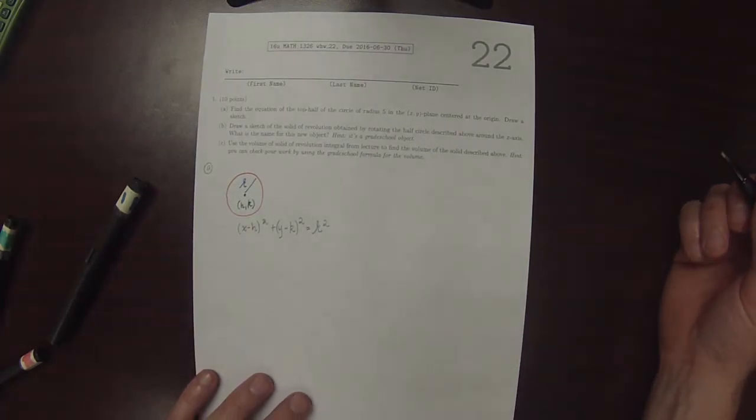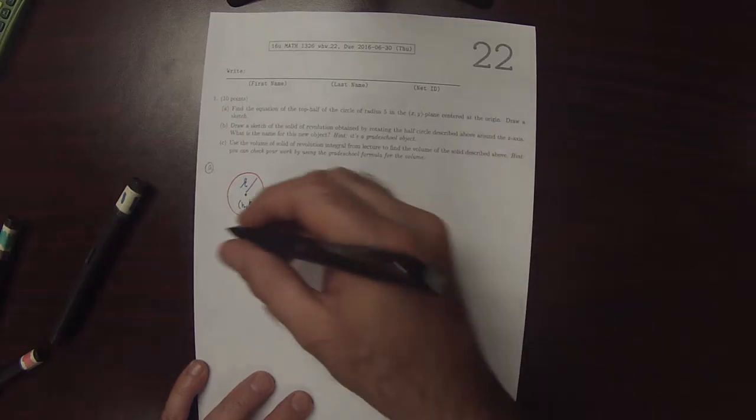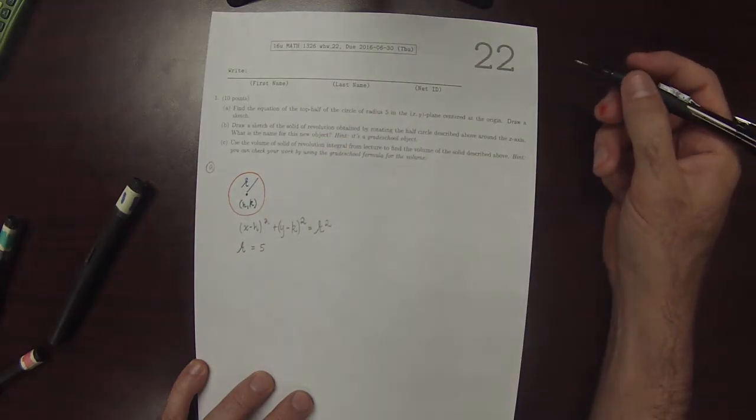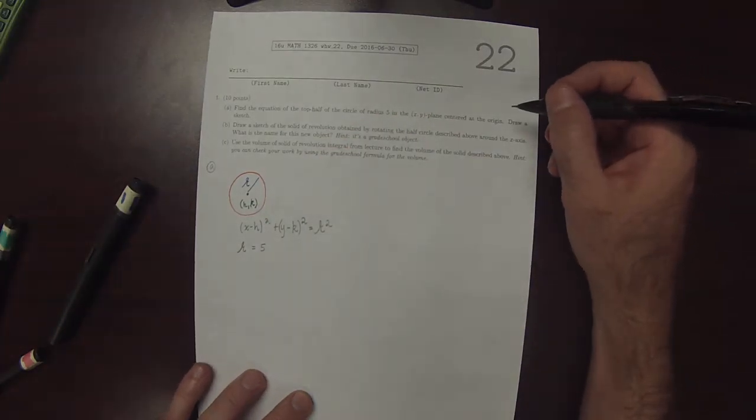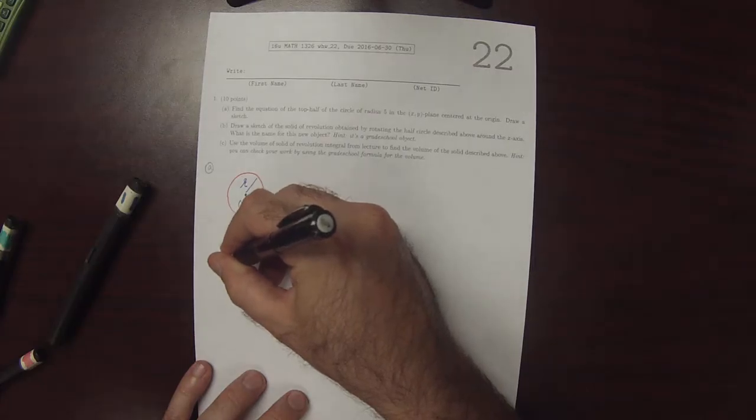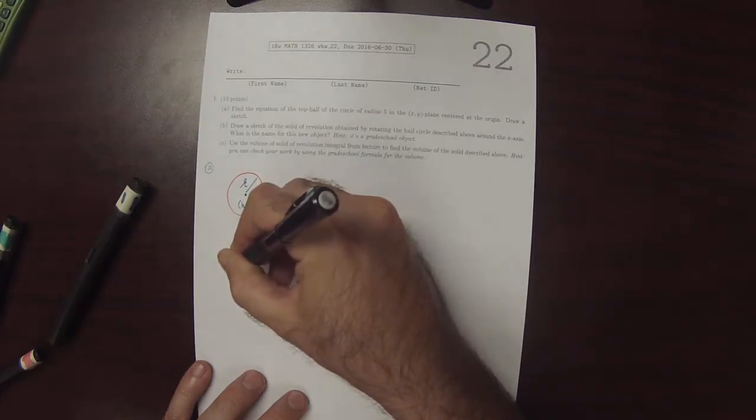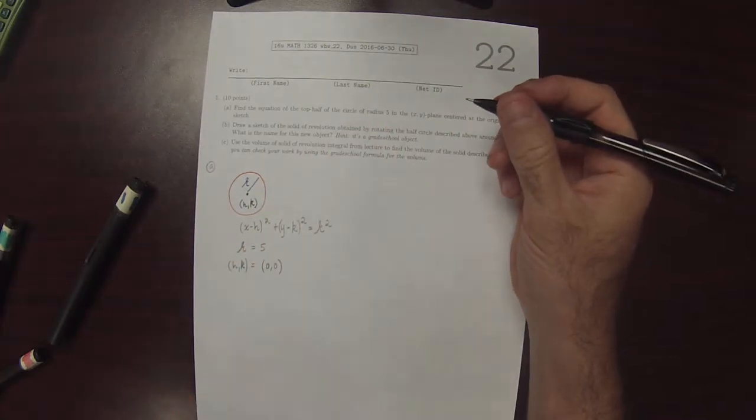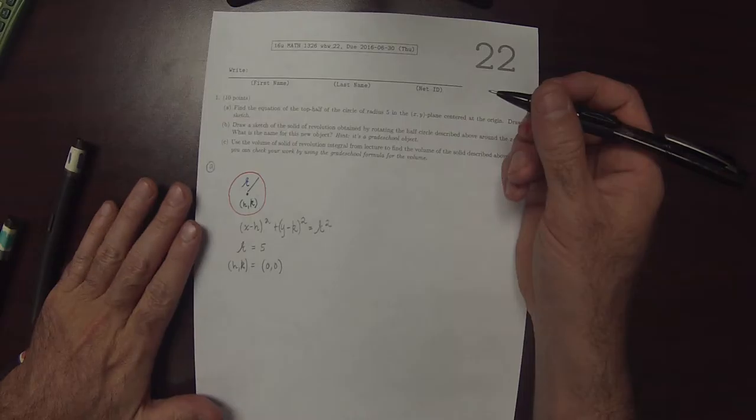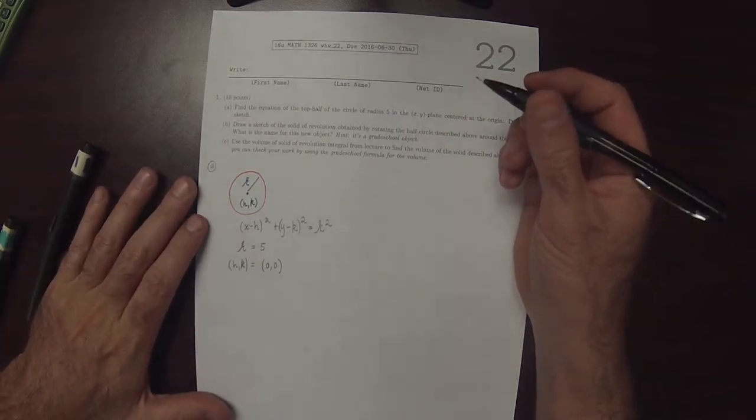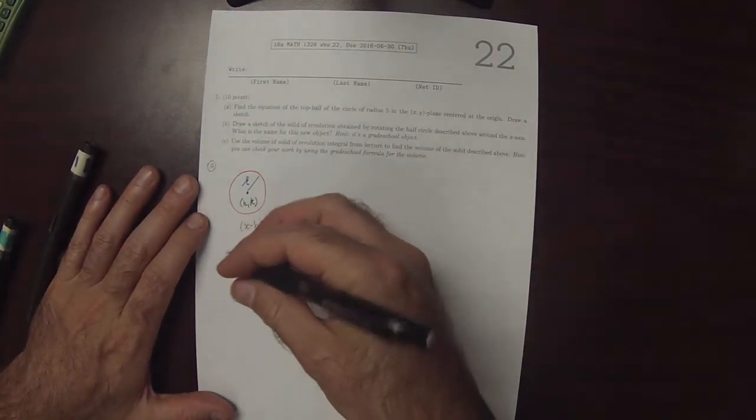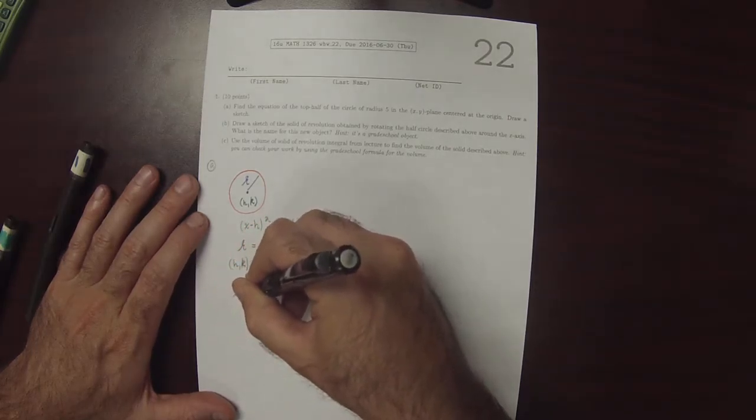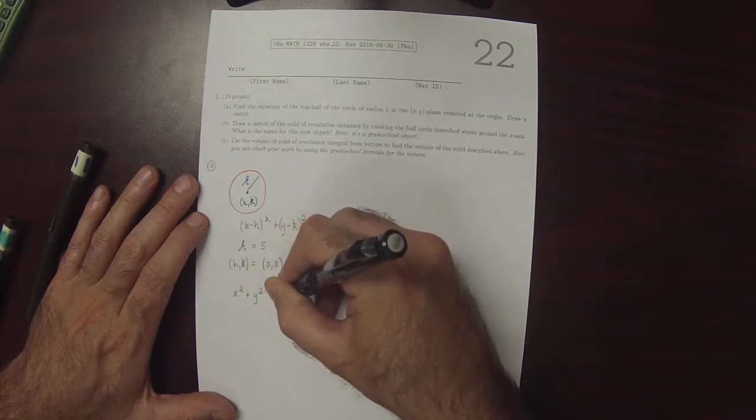In this particular example, it says of radius 5, so r is 5, and it says centered at the origin, so h, k is 0, 0. So that means that the circle, the equation of the circle that we're looking for, is x squared plus y squared is 5 squared.